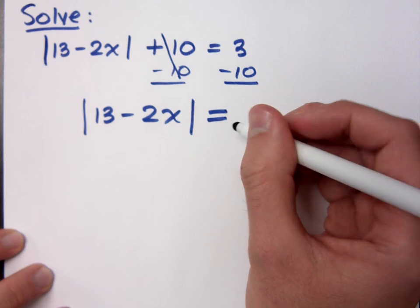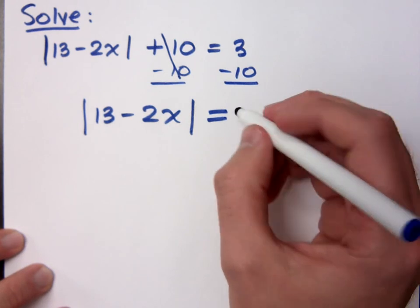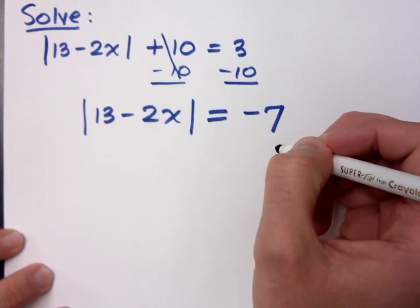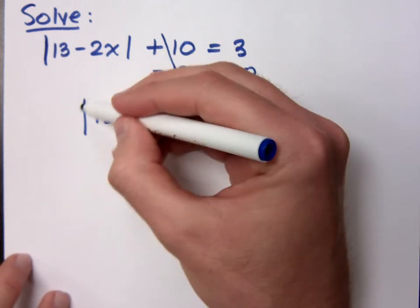Absolute value of 13 minus 2x equals negative 7? No, let's pause for a second.